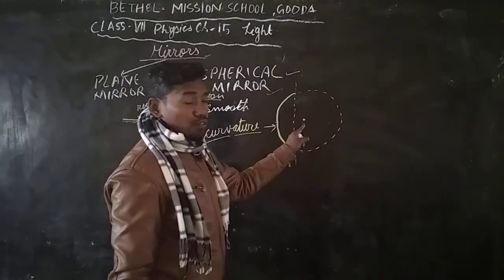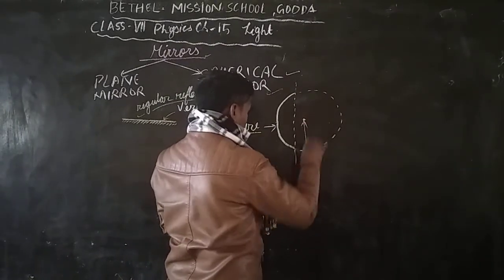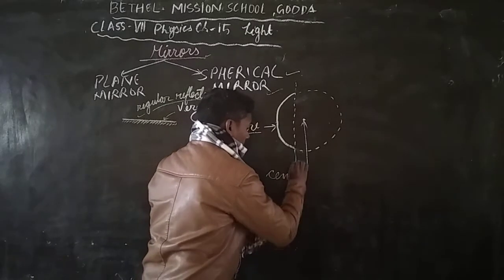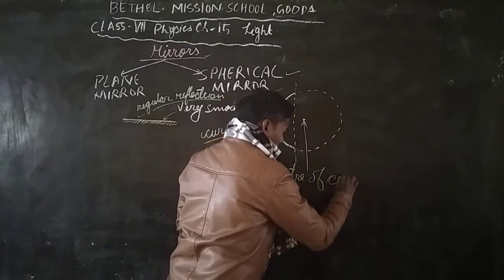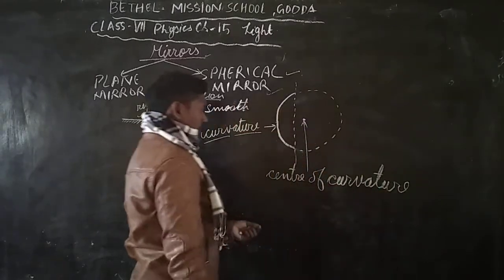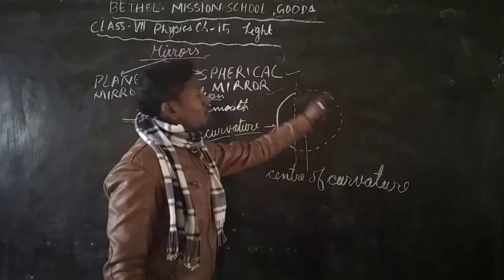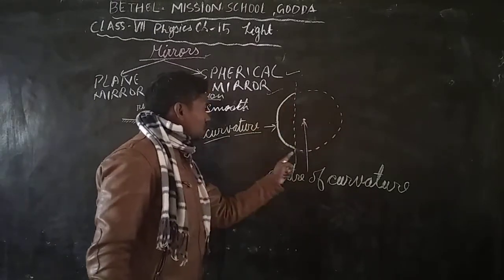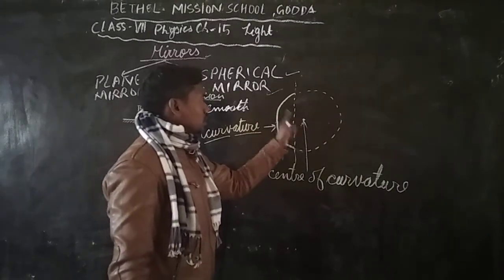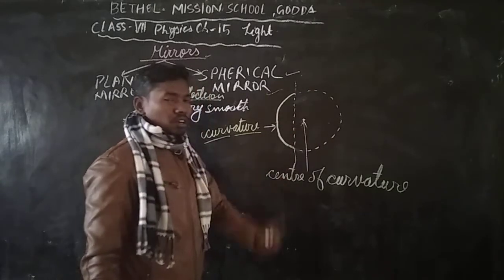The center of the sphere of which this curvature is a part is called center of curvature. This center is different from the geometric center of the curvature itself.